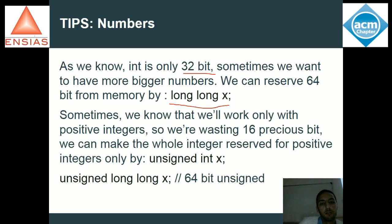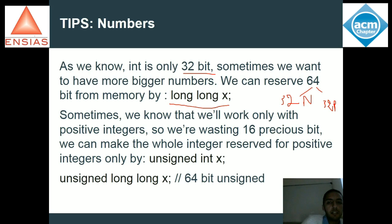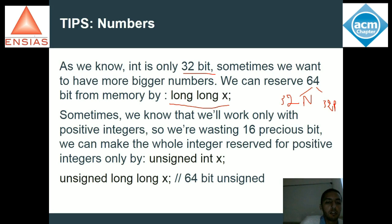Donc en fait, avec 64 bits, c'est 32 bits pour les négatifs et 32 bits pour les positifs. Souvent, dans le problème de compétition, ils te disent s'il s'agit d'entiers positifs strictement positifs ou pas. Quand c'est vraiment strictement positif, tu peux tout simplement dire unsigned long long, car pourquoi perdre 32 bits pour des valeurs négatives que tu ne vas jamais utiliser, puisque ton problème travaille seulement avec les positifs. C'est tout, je vous remercie pour votre attention.